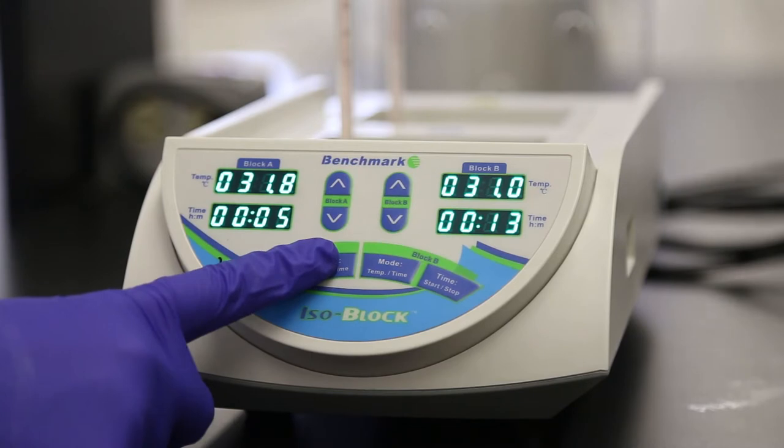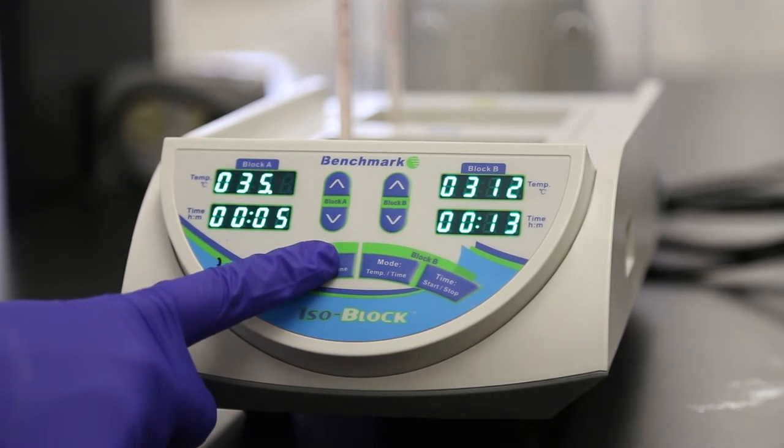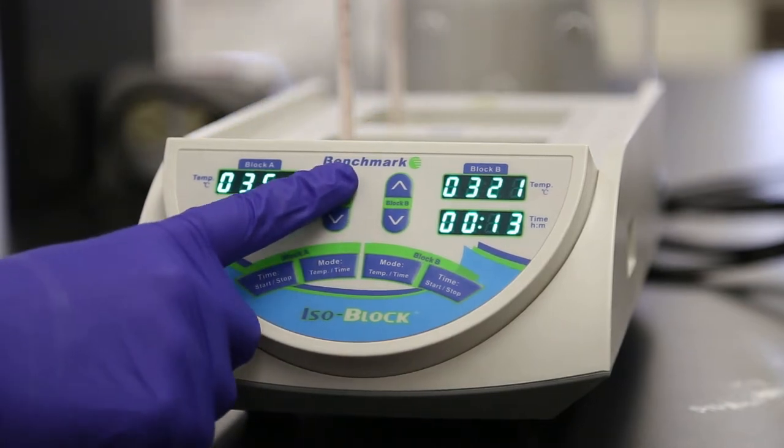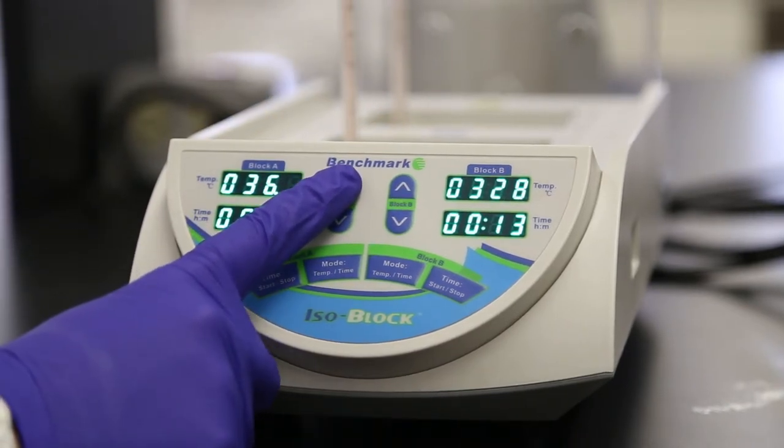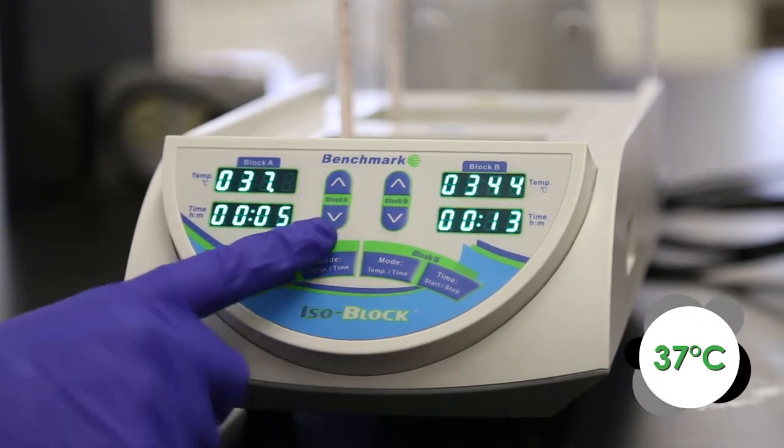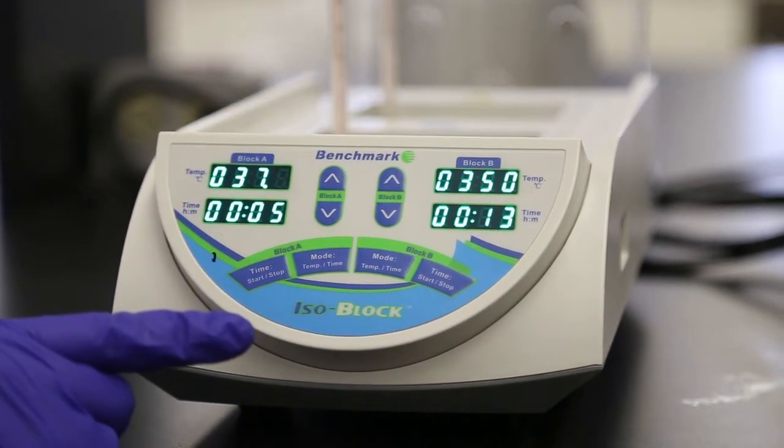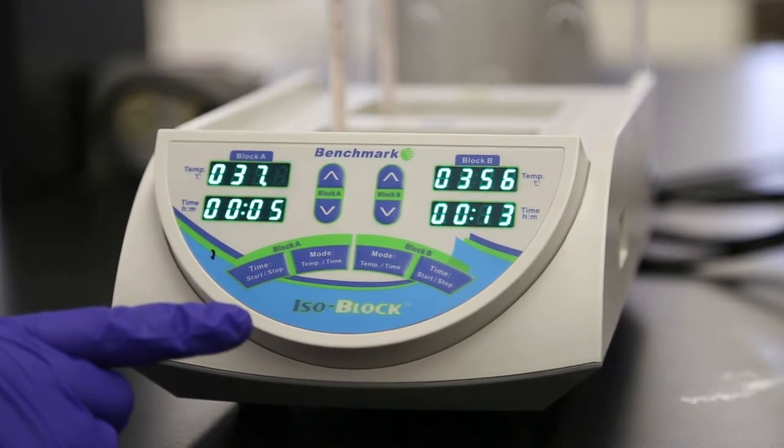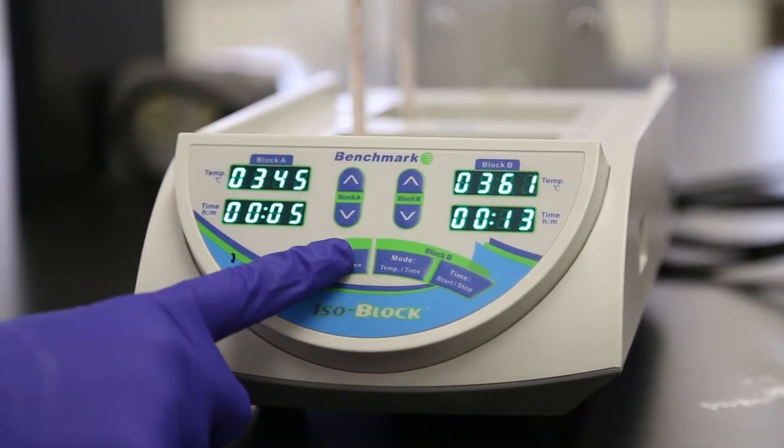Press Mode, Temp, Time for Block A once to select the temperature setting for the block in the rear of the unit. The last digit of the temperature's display flashes indicating the selected field. Using the Block A arrow keys, press and hold up or down to adjust the temperature setting to 37 degrees Celsius. Holding down the button adjust the setting temperature faster. The block immediately starts heating.